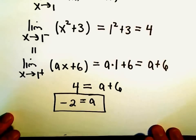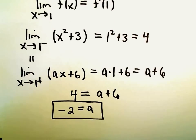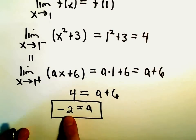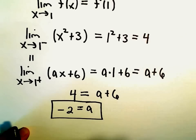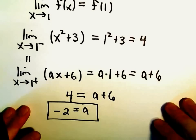So in this case, we've made the limit equal, because if we use the a value of negative 2, the left-hand limit and the right-hand limit will both equal 4, and so the limit exists.